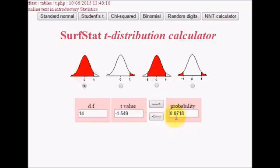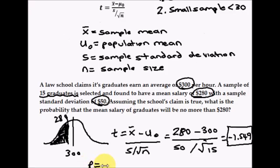And here's my probability, 0.0718. As a percentage, that's going to be 7.18%. So the probability the mean salary of graduates will be no more than $280 is 7.18%.